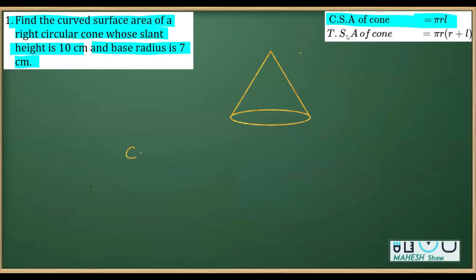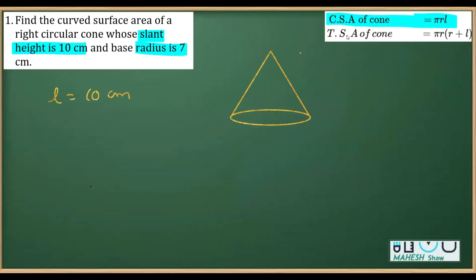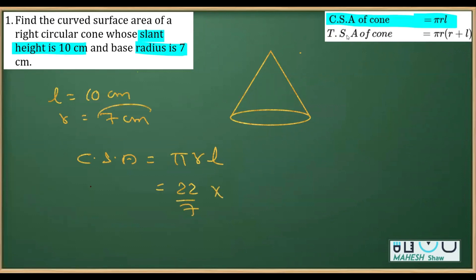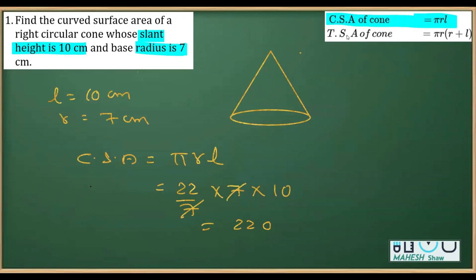Let's write down the information. The slant height l is 10 centimeters — it's important to remember slant height is denoted by l. The radius is 7 centimeters. So, curved surface area = π r l = (22/7) × 7 × 10. The 7 and 7 cancel, giving 22 × 10 = 220 centimeters square.